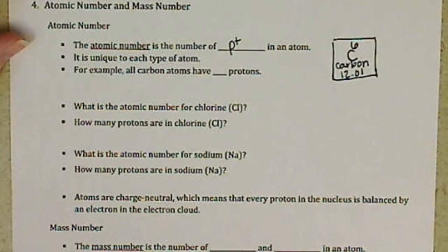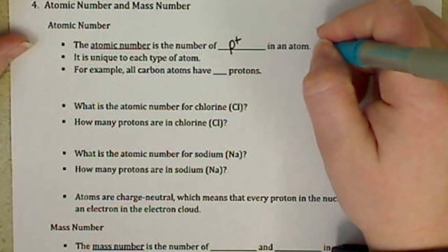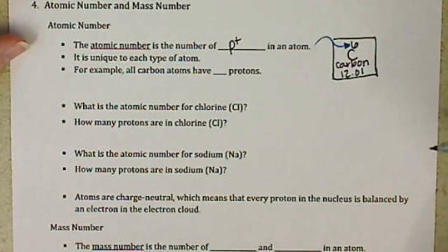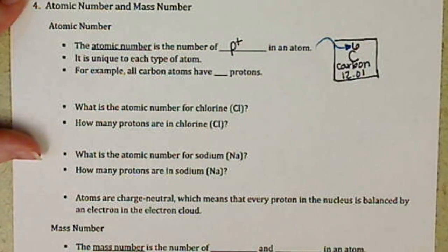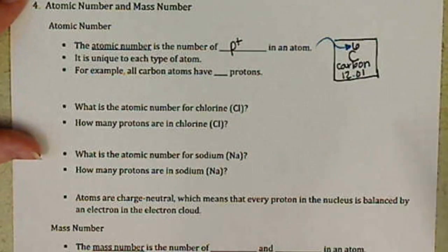The atomic number is basically this number that's above the symbol. So atomic number and number of protons are basically the same number. So if we have a carbon atom, a carbon atom is going to have six protons.